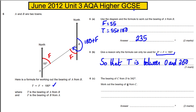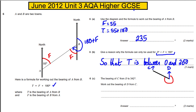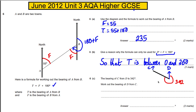The bearing of C from D is 342 — work out the bearing of D from C. This is a different type of question. We're told the bearing of C from D is 342, so let's draw it out. Here is D, and the bearing of C from D is 342, so this whole angle here equals 342.